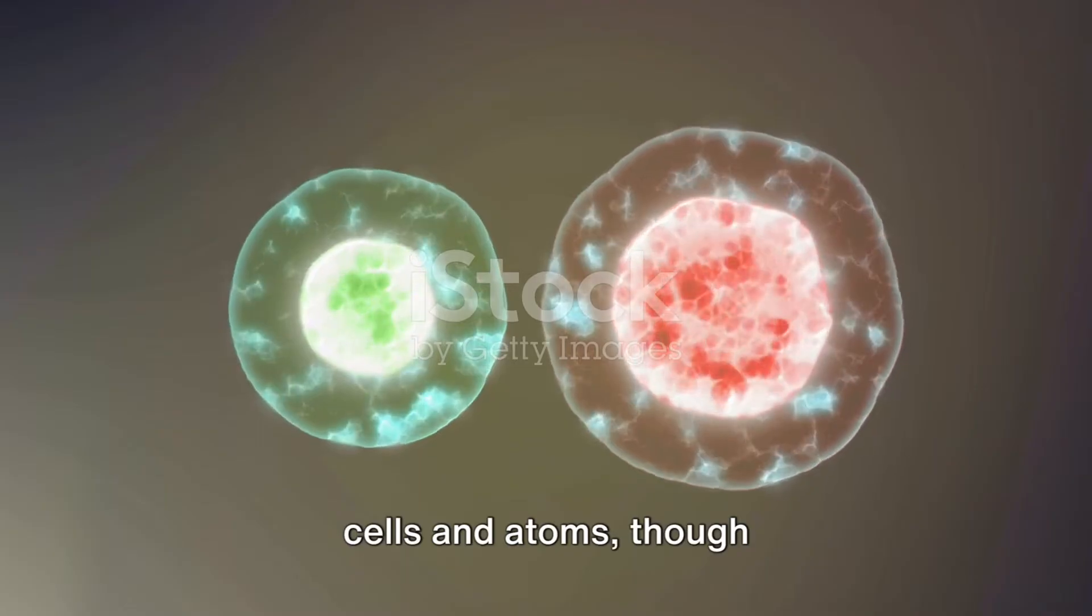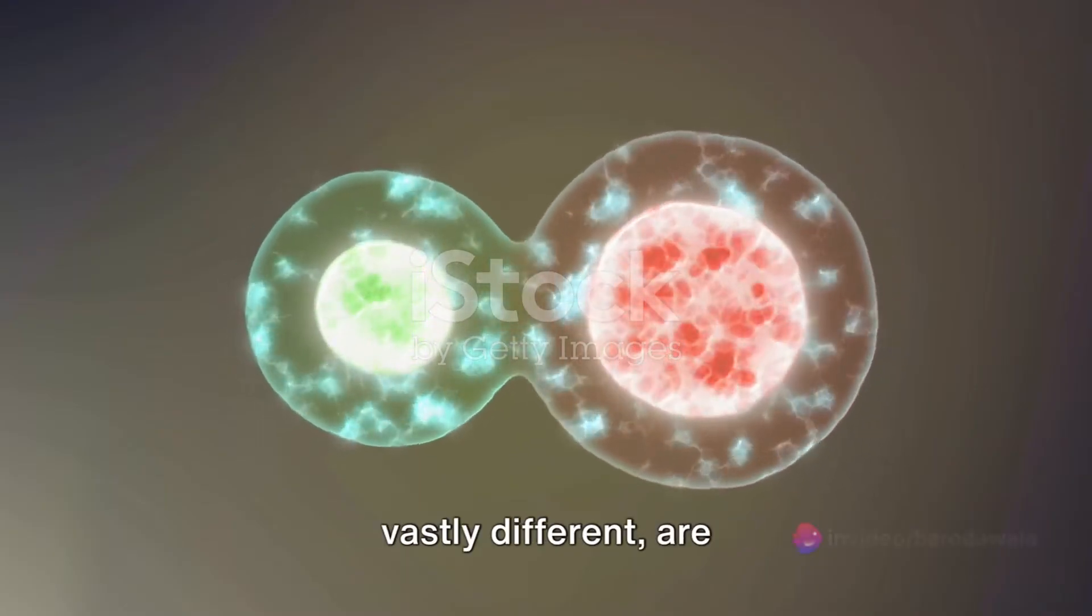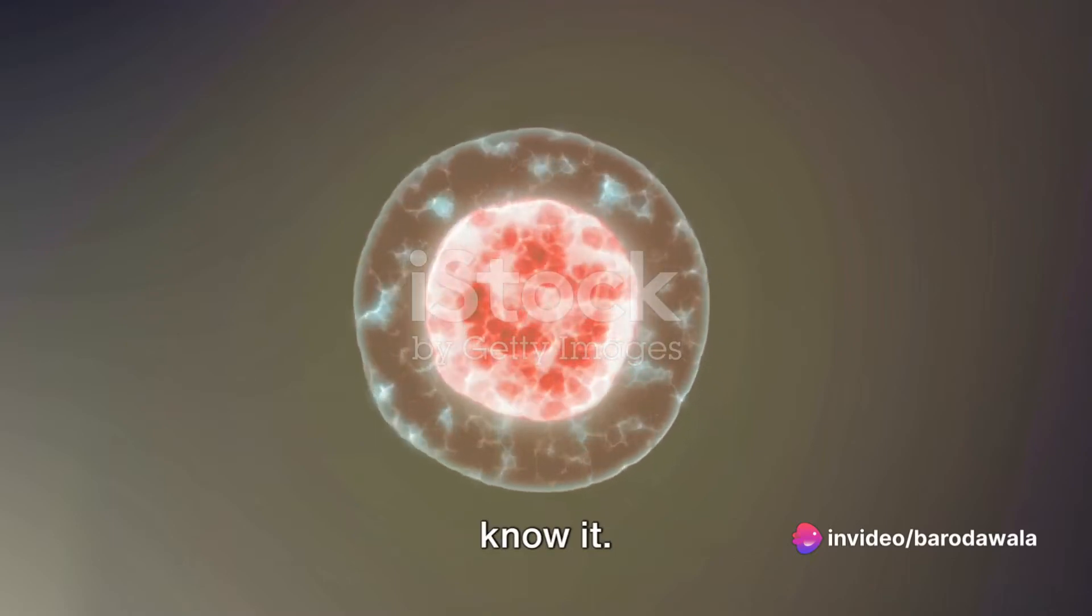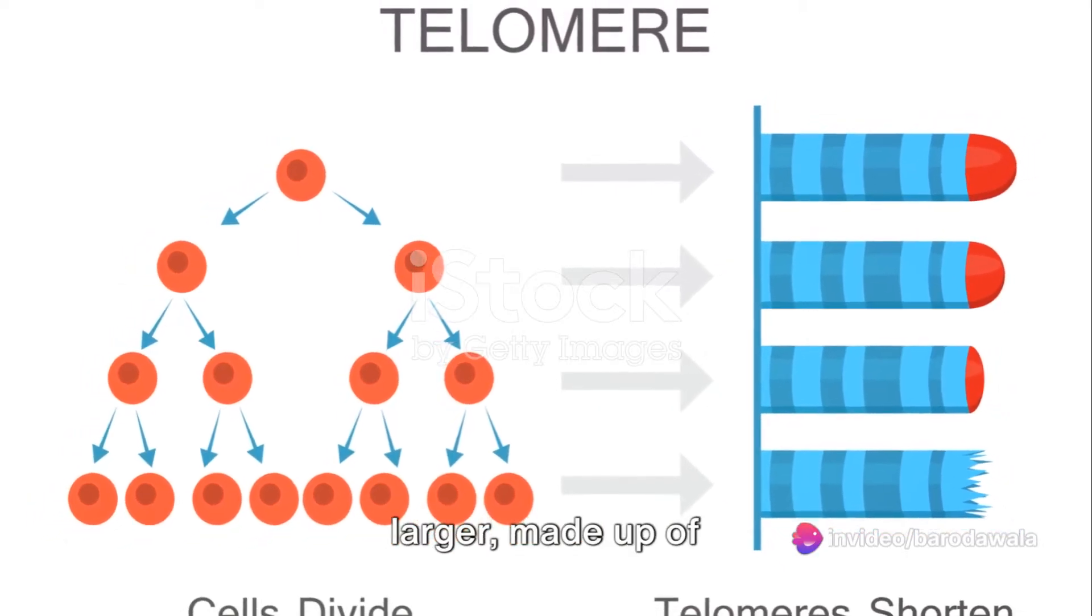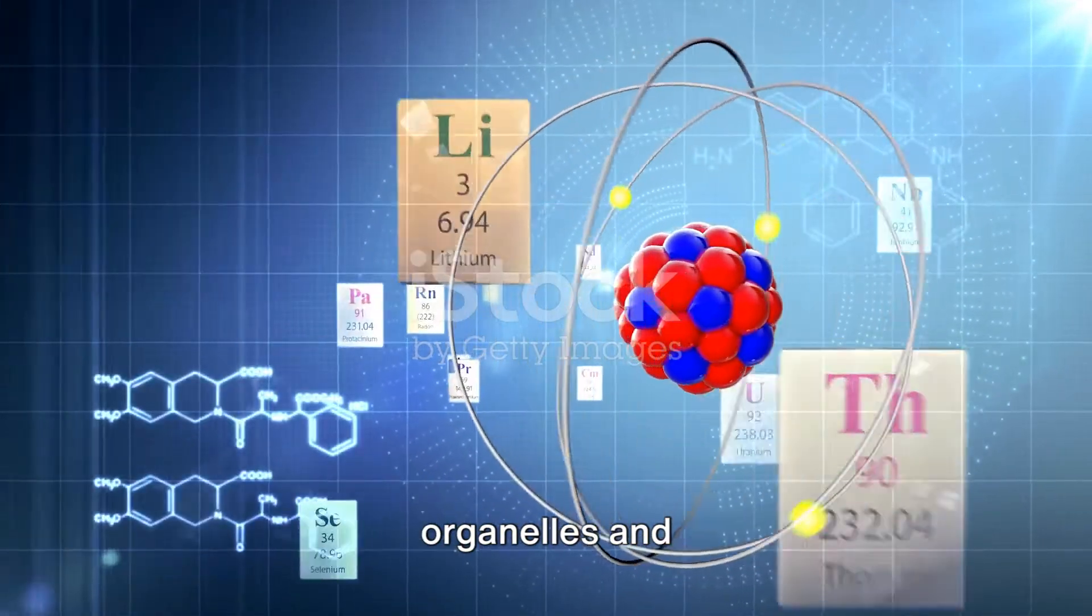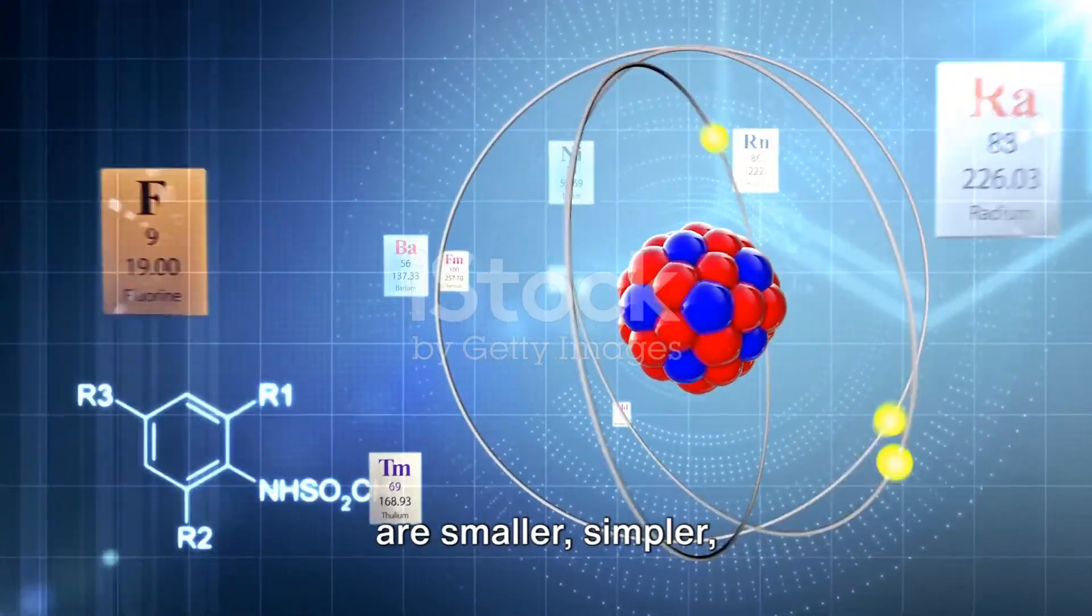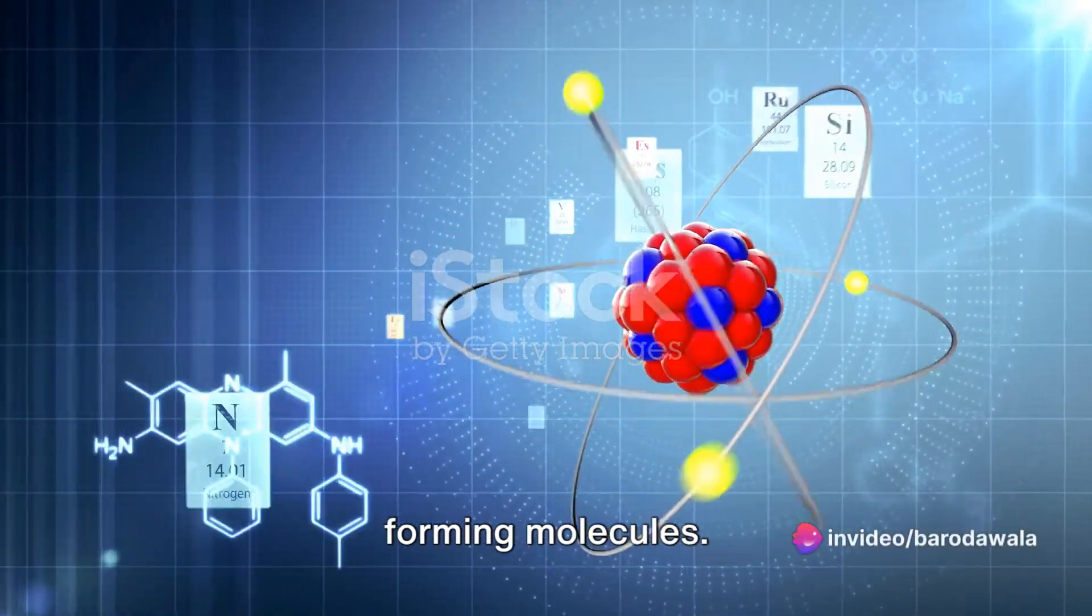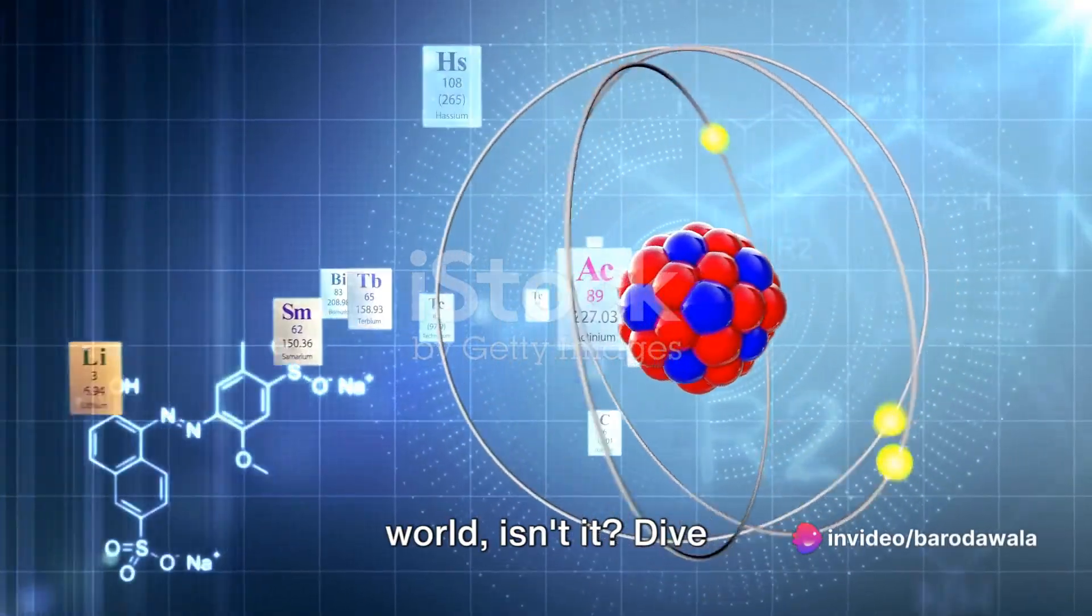So, we've seen that cells and atoms, though vastly different, are both fundamental to the existence of life as we know it. To recap, cells are larger, made up of organelles, and responsible for life's functions, while atoms are smaller, simpler, and only gain significance when forming molecules. It's a fascinating world, isn't it?